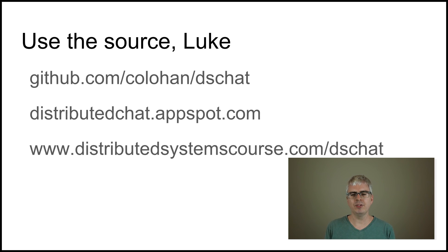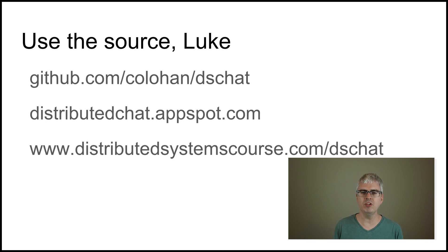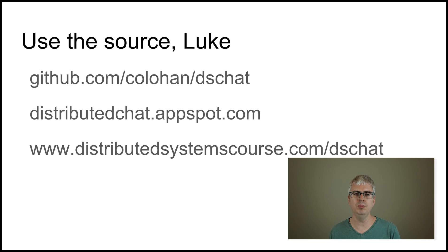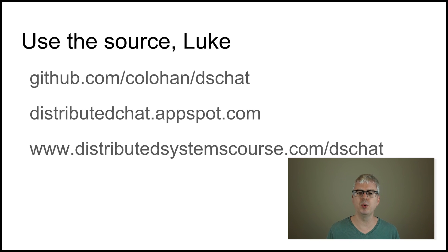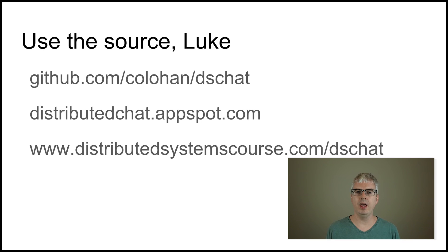And last, now that I've given you a bunch of stuff to play with, go and play with it. Use the source. Here's a link to the source on GitHub: go to github.com/colahan/dschat and you can get both the App Engine and the uWSGI version of this application there. And here are the URLs to the live versions of the apps so you can go and play with them. Have fun!